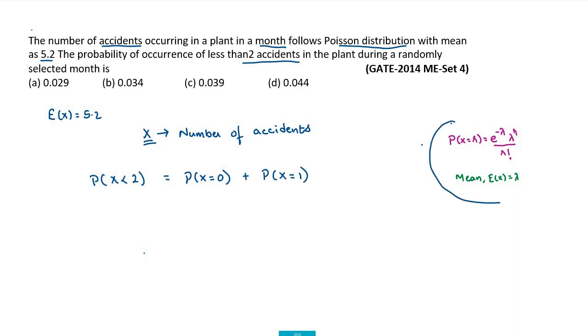Then using these formulas to calculate the probability, probability that no accidents occur is equal to e to the power of minus 5.2, times 5.2 to the power of 0, divided by 0 factorial, plus